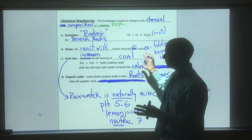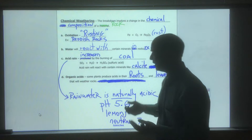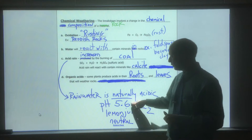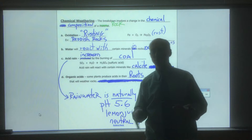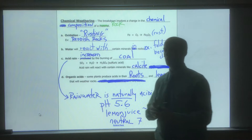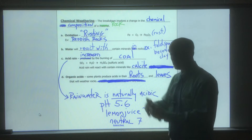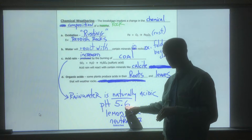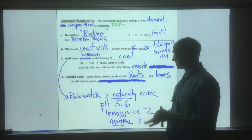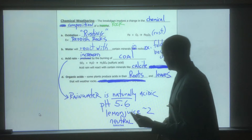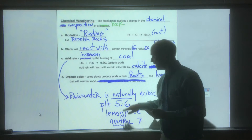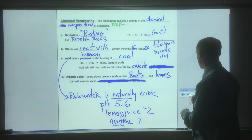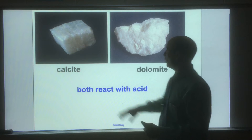The key point about acid rain here is that rainwater is naturally acidic. Rainwater has a natural pH — pH measures how acidic or basic something is, with seven being neutral. Rainwater is pH 5.6, so it's slightly acidic. Lemon juice, for comparison, is about a two on that scale. Even though rainwater is only slightly acidic, given enough time, it will react with minerals like calcite.